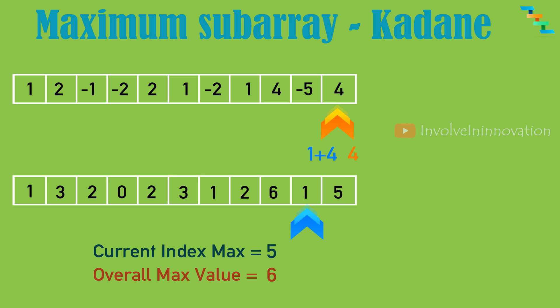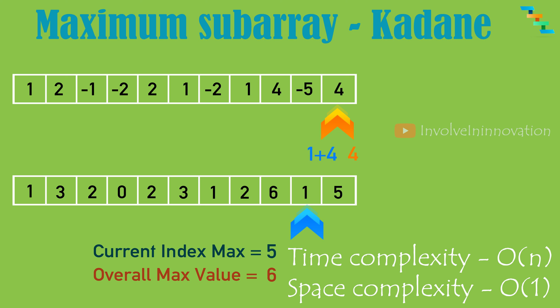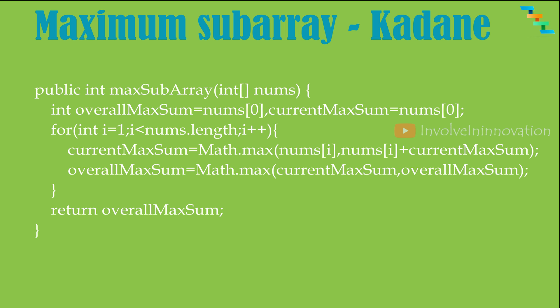The overall maximum value is 6, which is the answer. Now we will see this logic in a Java program. We create a Java function that returns an integer value — the maximum sum — and takes the input array. We create two local variables: current index max sum and overall max sum. Initially we assign the 0th index of the array to both. Then we iterate from index position 1 to n, assigning the maximum of the current index value and the current index value plus the current index max sum.